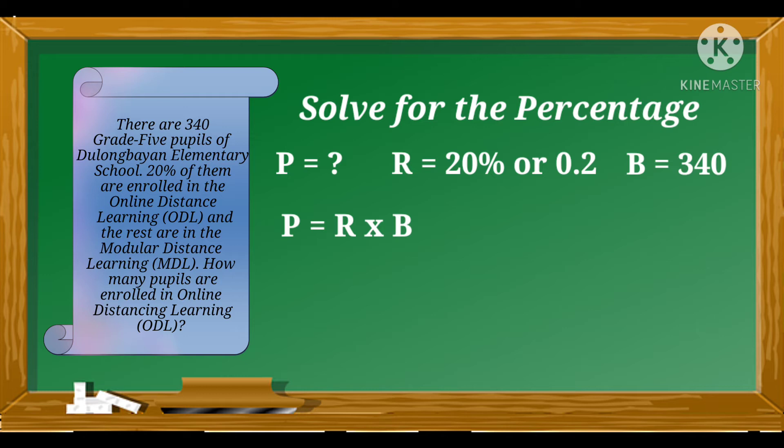Then, we will substitute the value of R and B to our formula. So, 0.2 times 340. We will multiply 340 by 0.2. So, zero times two is equal to zero. Four times two is equal to eight.